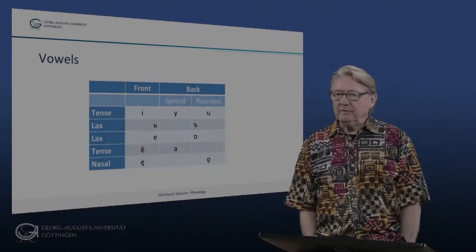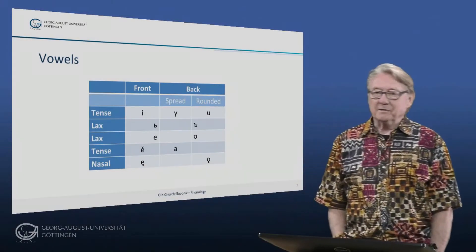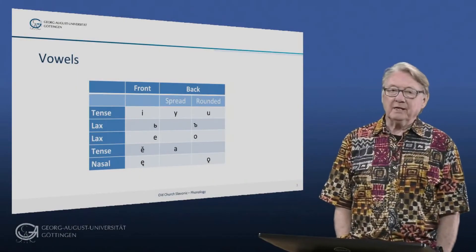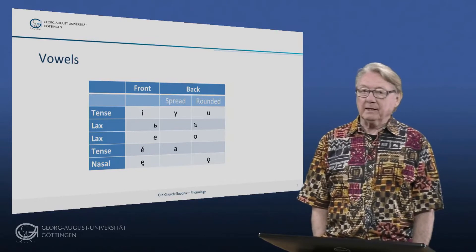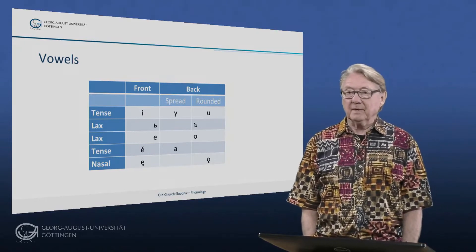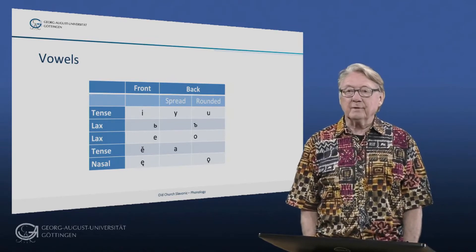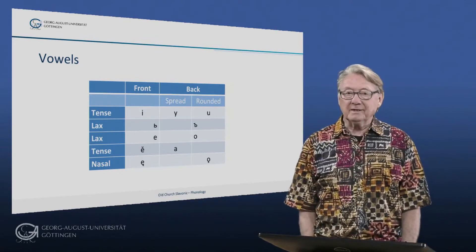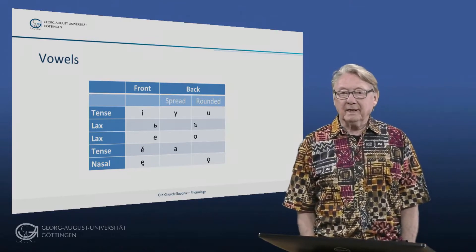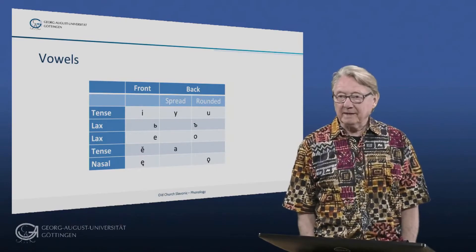Two of the lax vowels are represented with Cyrillic letters, referred to as the front yer and the back yer.